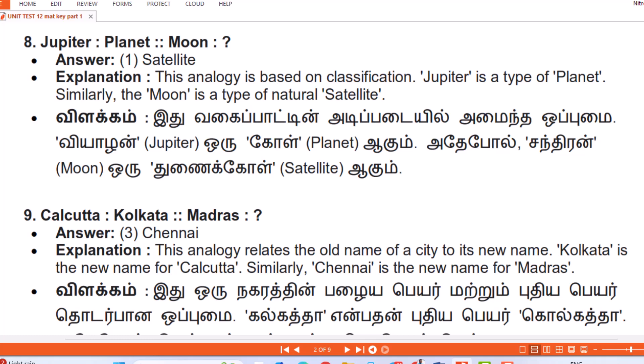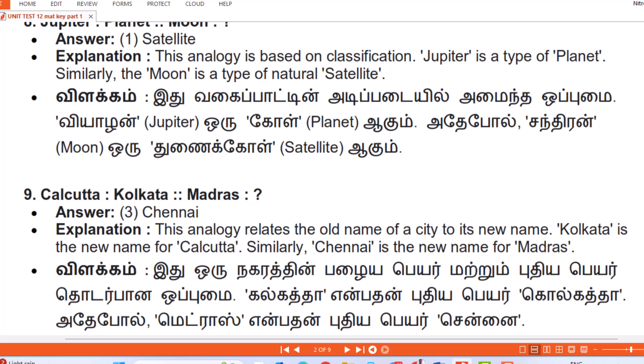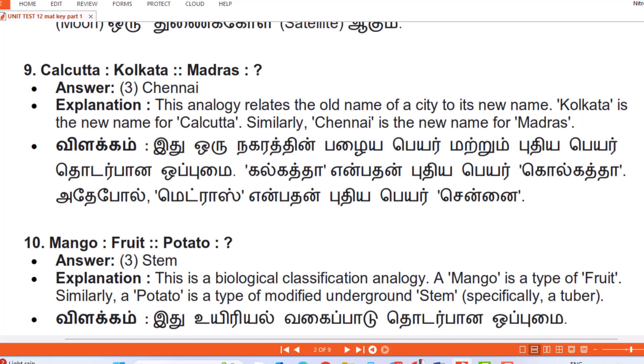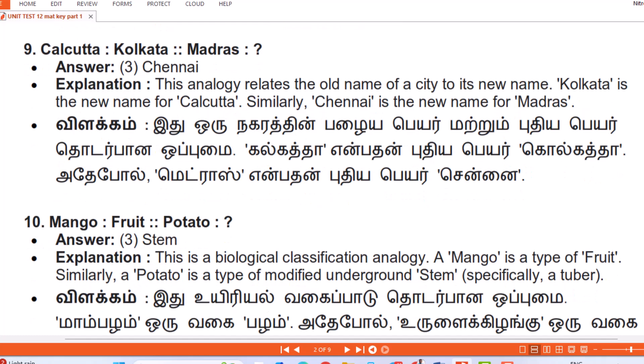Question 9: Calcutta : Kolkata :: Madras : Answer — Chennai. Explanation: This analogy relates the old name of a city to its new name. Kolkata is the new name for Calcutta; similarly Chennai is the new name for Madras. (Tamil: Oru nagarattin palaya payar matrum pudhiya payar thodarbana opumai — Kolkata in palaya payar Calcutta, adepol Madras in pudhiya payar Chennai.)